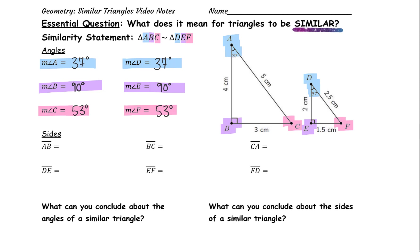The similarity statement also gives us important information about which sides correspond with which. For example, the first two letters AB — that side will correspond to the first two letters DE. Our next two letters, BC, that side will correspond with EF. And finally, your last letter and your first letter, CA and FD — those sides will correspond.